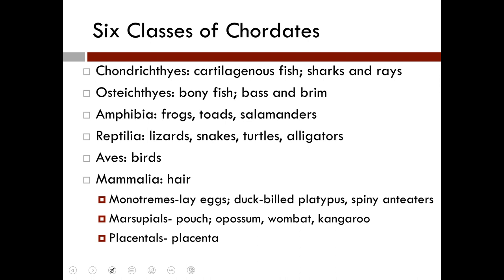From here we get to Aves, which as described are included within Reptilia, and now to class Mammalia. In class Mammalia we have the monotremes, the marsupial mammals, and the well-developed placental mammals — the Prototheria, the Metatheria, and the Eutheria. Mammals are amniotes with hair; females nourish young with mammary glands; there is differentiation of teeth; three middle ear bones — the stapes, incus, and malleus; a diaphragm; a heart with two separate atria and two separate ventricles; and they are endotherms with a highly developed nervous system.